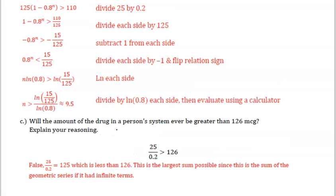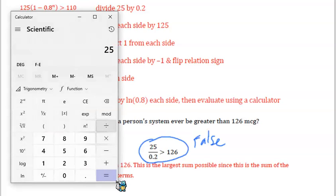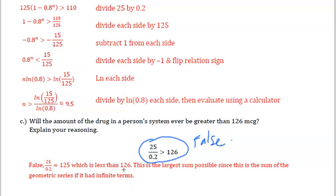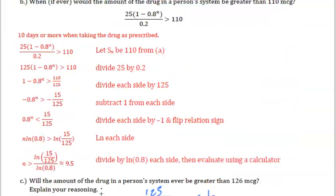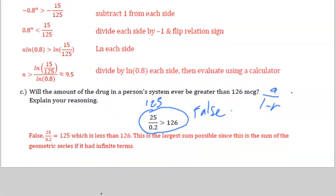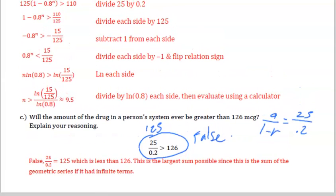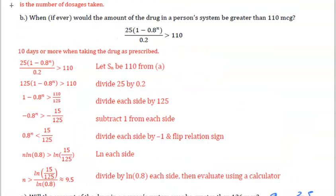Part c: will the amount of the drug in a person's system ever be greater than 126 micrograms? Explain your reasoning. 25 over 0.2 is greater than 126. Now this is false. 25 divided by 0.2 is 125. It's less than 126. The largest sum possible is this since the sum of the geometric series with infinite terms, so you'll plug it into this formula. So A is 25 and then 1 minus R would be 0.2. So that basically means if the patient takes a dosage only once after each 12 hours they could not possibly overdose on it.